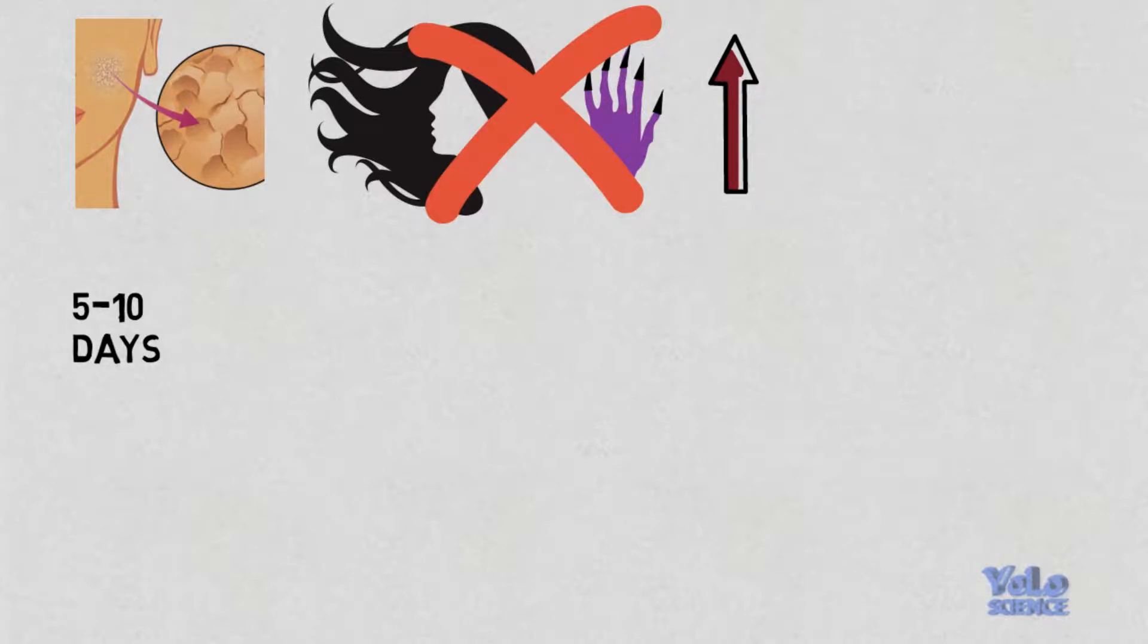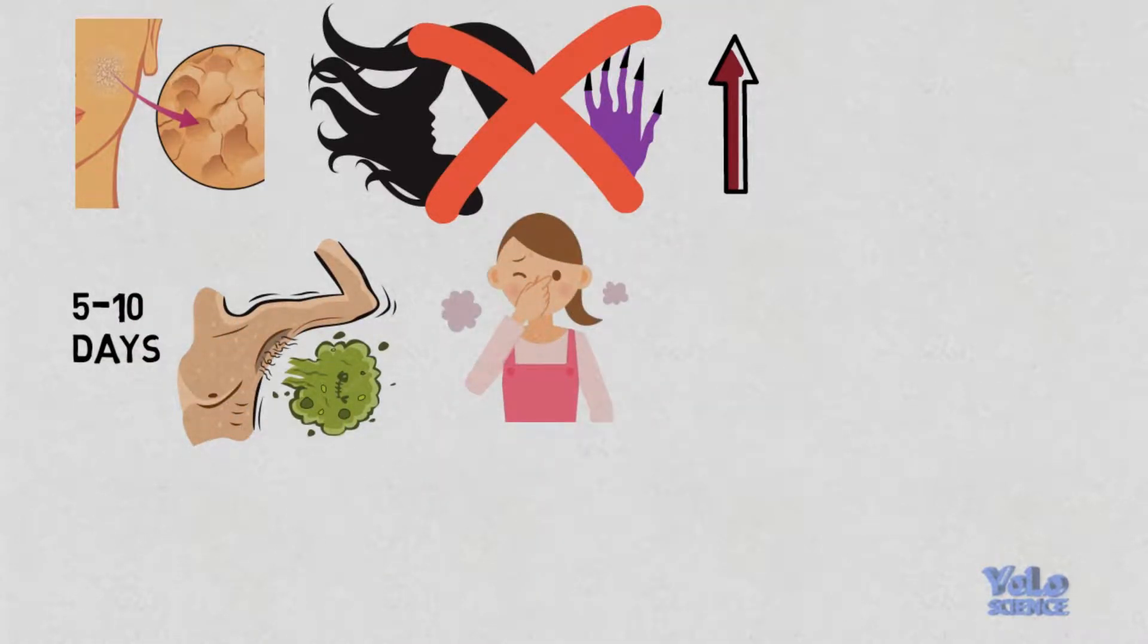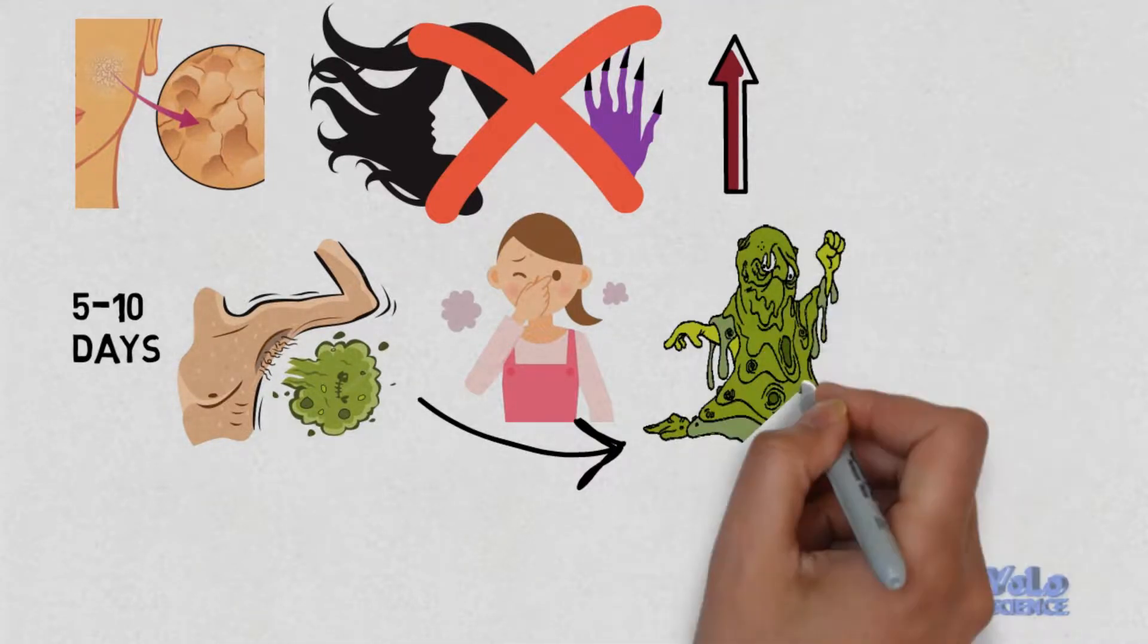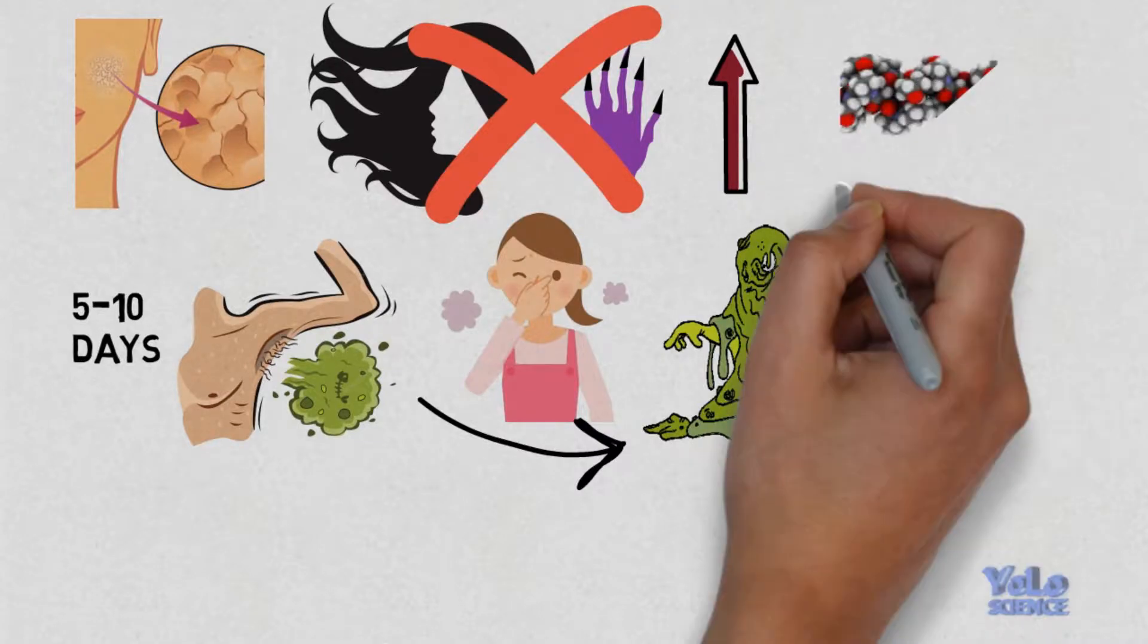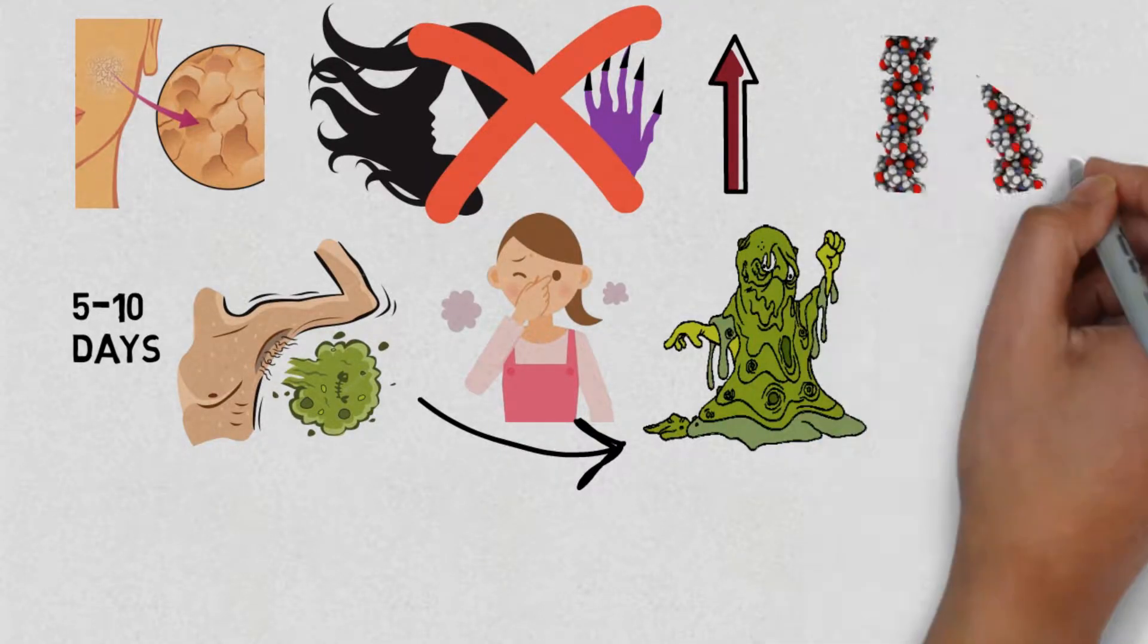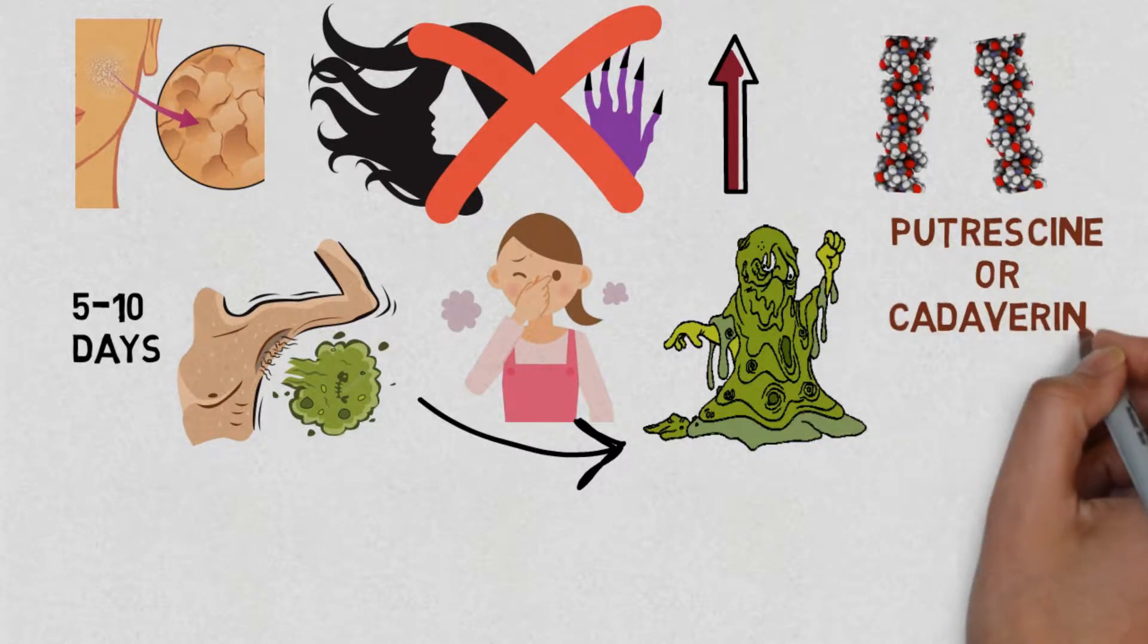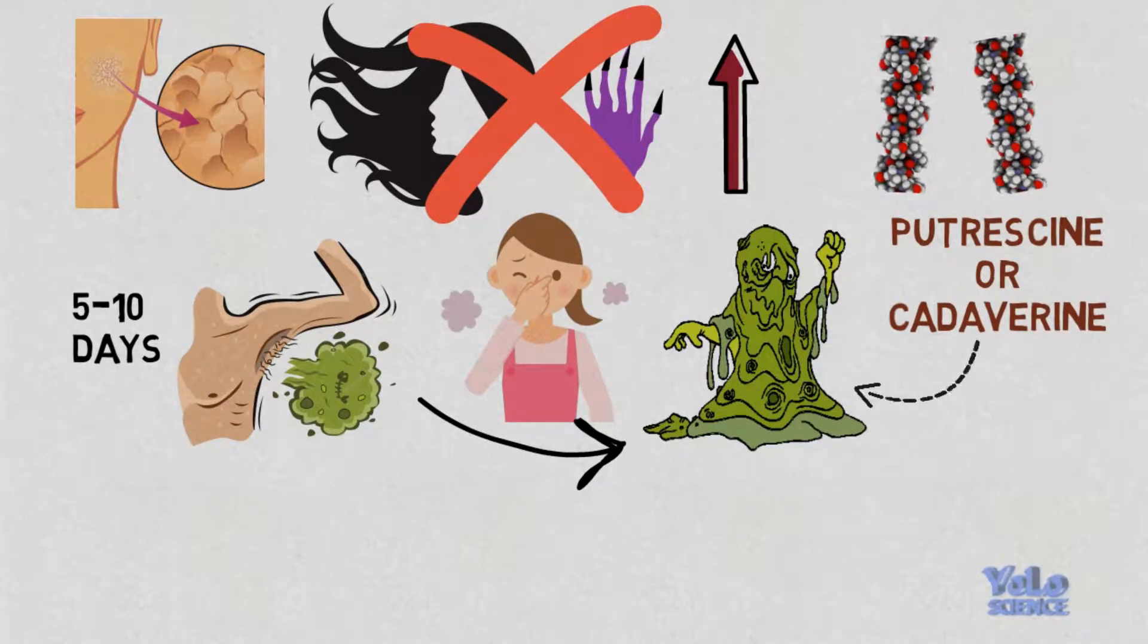After 5 to 10 days, the body starts smelling awful, around which you will never want to wander. The reason for this is that the body is barely decayed. When the protein or amino acid starts to break down, then chemicals called putrescine or cadaverine are released, which are very smelly and can be fatal on high dose.